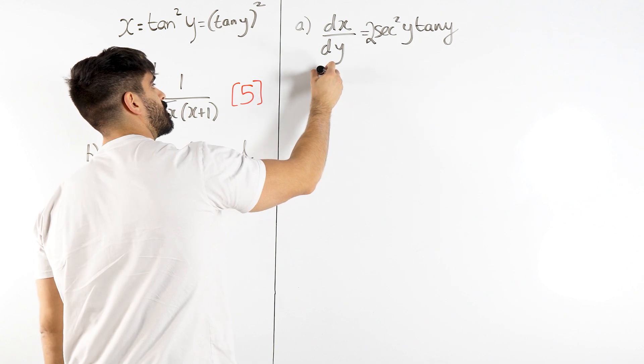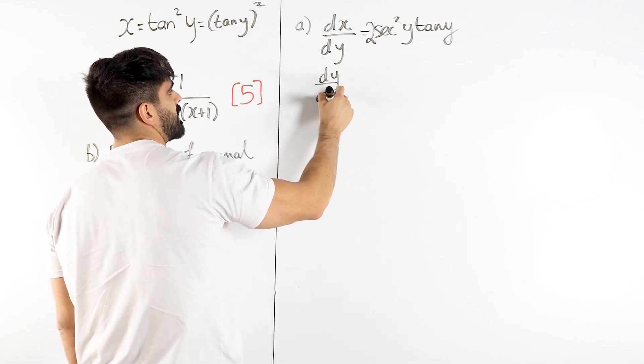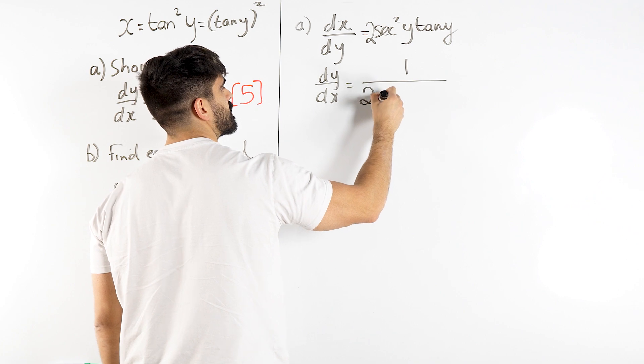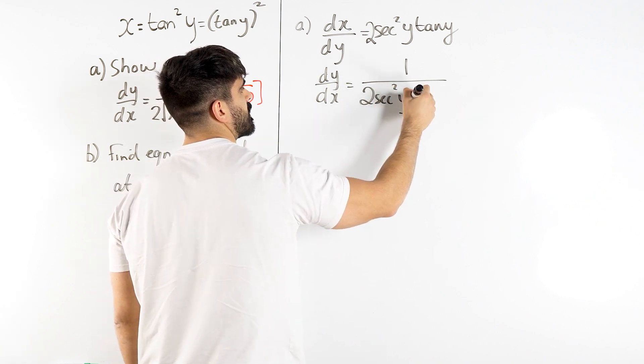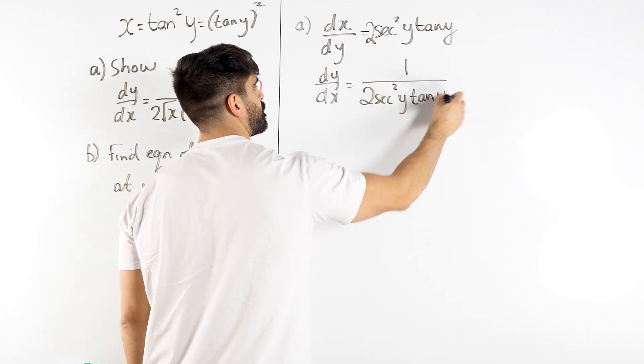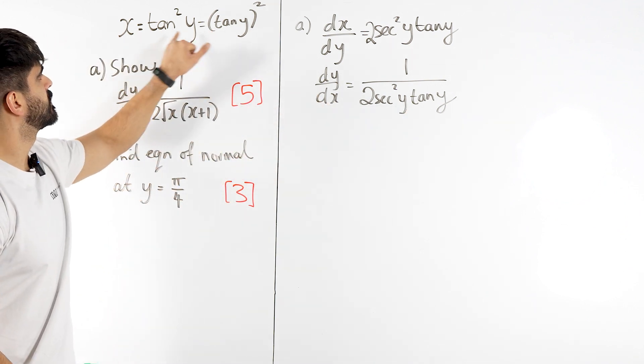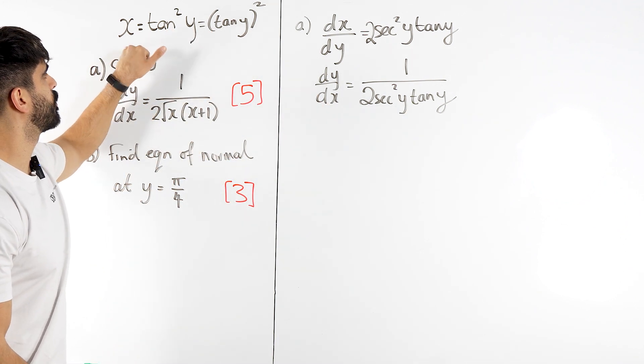Then we reciprocate, so we get dy by dx is 1 over 2 sec squared y tan y. Now I know tan y, if tan squared y is x then tan y is root x.